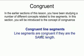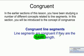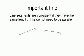What's most important is that congruent line segments have the same length. Line segments are congruent if they have the same length. They do not need to be parallel. In previous sections we talked about parallel lines, perpendicular lines, and intersecting lines. If they're congruent, it doesn't mean they have to be parallel and they don't have to be in the same plane. They just have to be the same length.